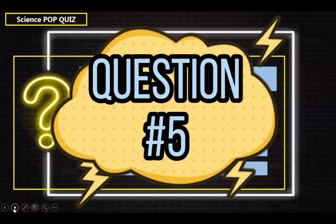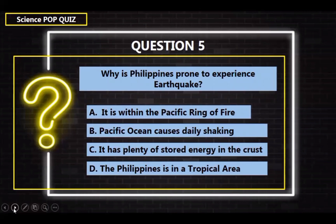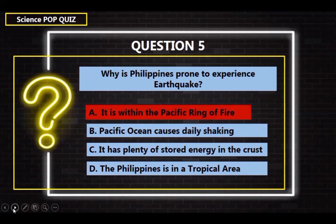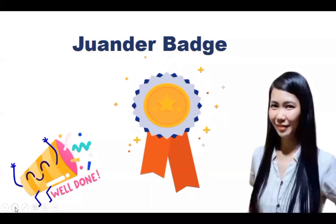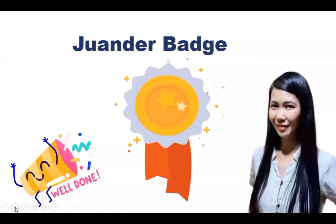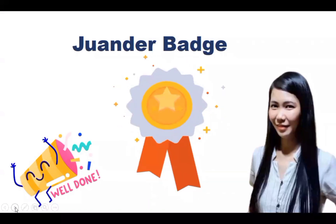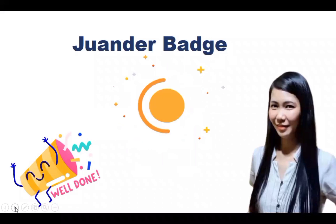Question number 5: Why is the Philippines prone to experience earthquakes? A. It is within the Pacific Ring of Fire, B. The Pacific Ocean causes daily shaking, C. It has plenty of stored energy in the crust, D. The Philippines is in a tropical area. The correct answer is letter A — It is within the Pacific Ring of Fire. Very well done! I am happy that you were able to challenge yourself. How many scores did you collect? For all the effort that you do, I will give you another awesome badge.